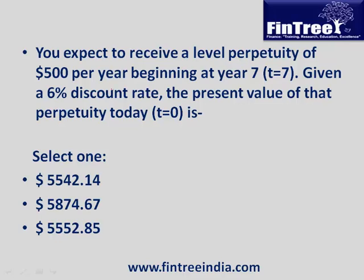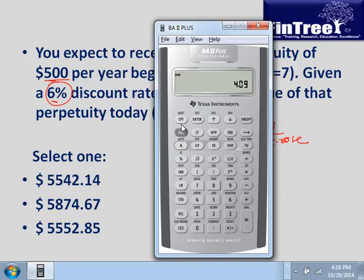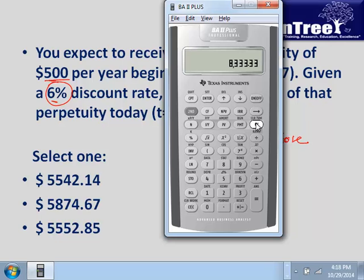You expect to receive a level perpetuity of $500 per year beginning at year 7. Given a 6% discount rate, what is the present value of that perpetuity today? If cash flows start at year 7, the perpetuity value is calculated at year 6: cash flow divided by rate equals 500 divided by 6% equals $8,333. Then set that as FV, N is 6, IY is 6, compute PV — the answer is $5,847.